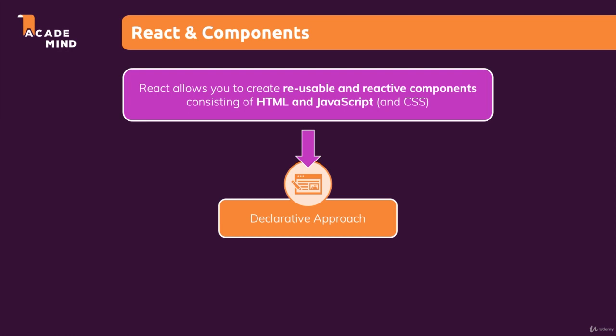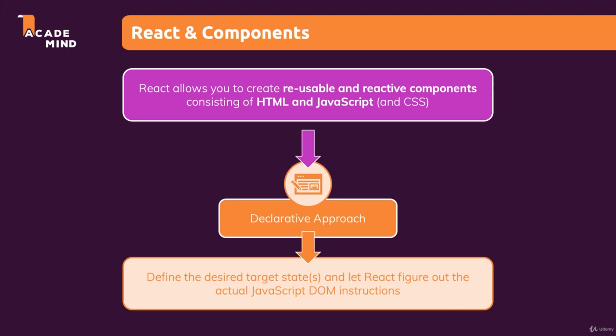Instead, with React — and that's really important — you will always define the desired end state: the target state, or possibly also different target states depending on different conditions. It's then React's job to figure out which elements on the actual web page might need to be added, removed, or updated. You don't write these concrete DOM updating instructions on your own as you would with just JavaScript. With React and React components, you just define these end states and under which conditions which state should be used, and then React will do all of the rest under the hood. It's a bit like magic — not actual magic, but it will make your life as a developer much easier.